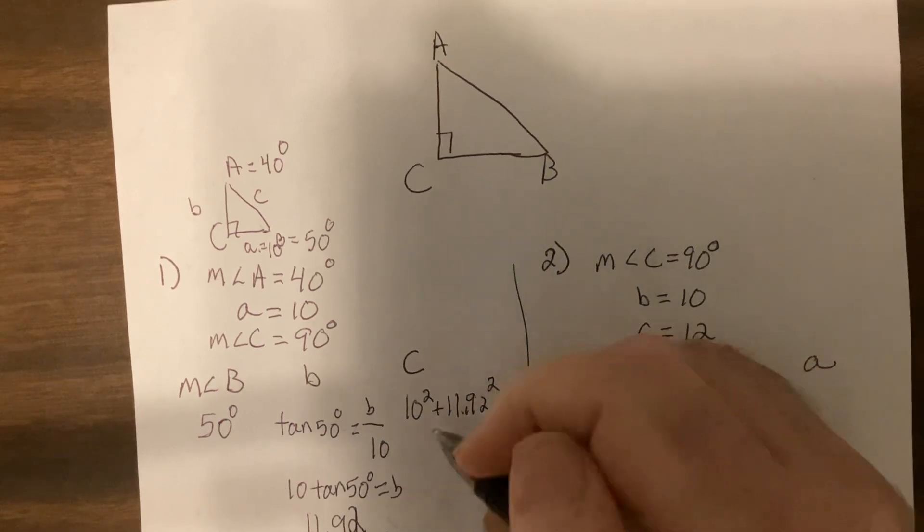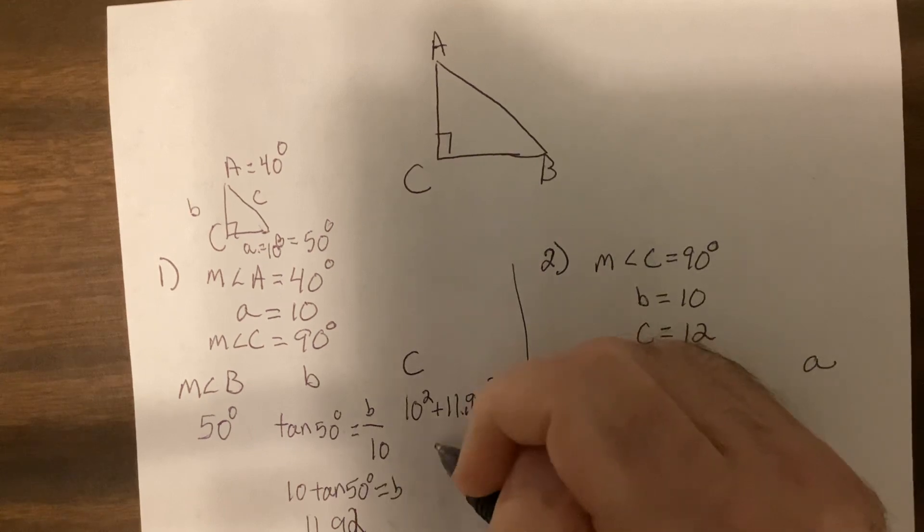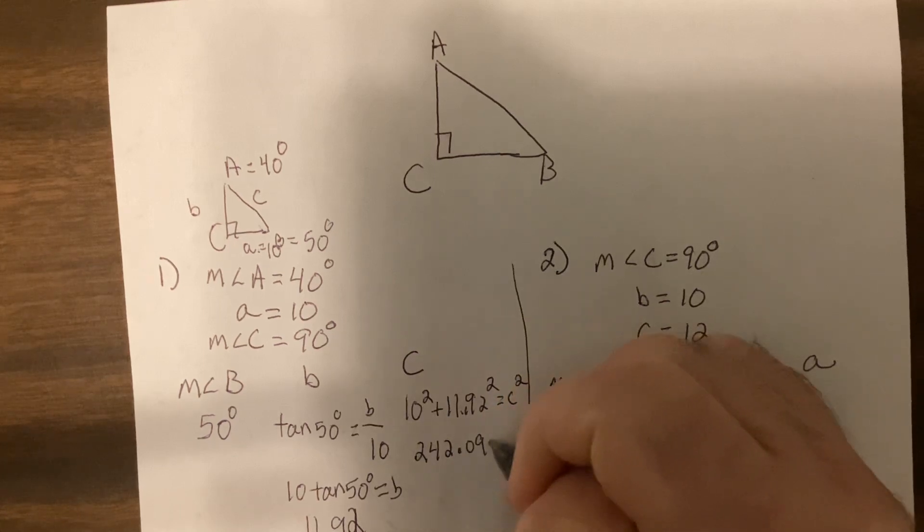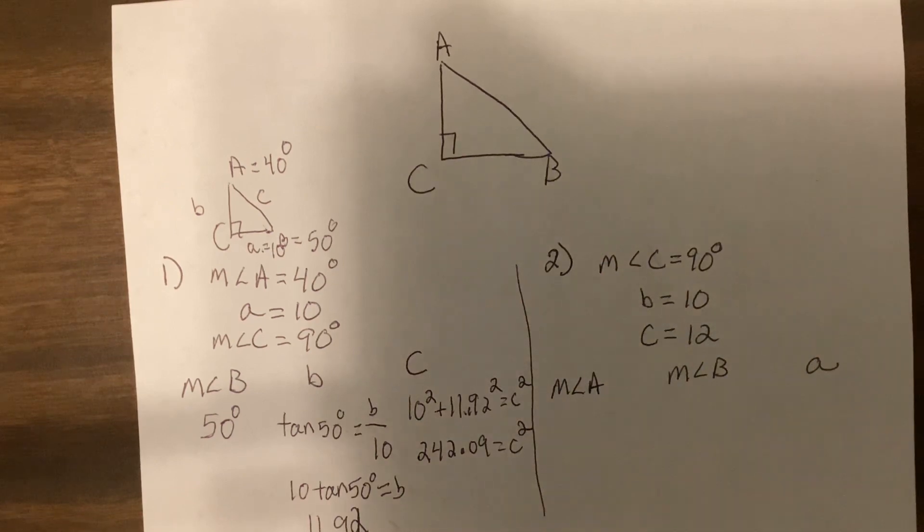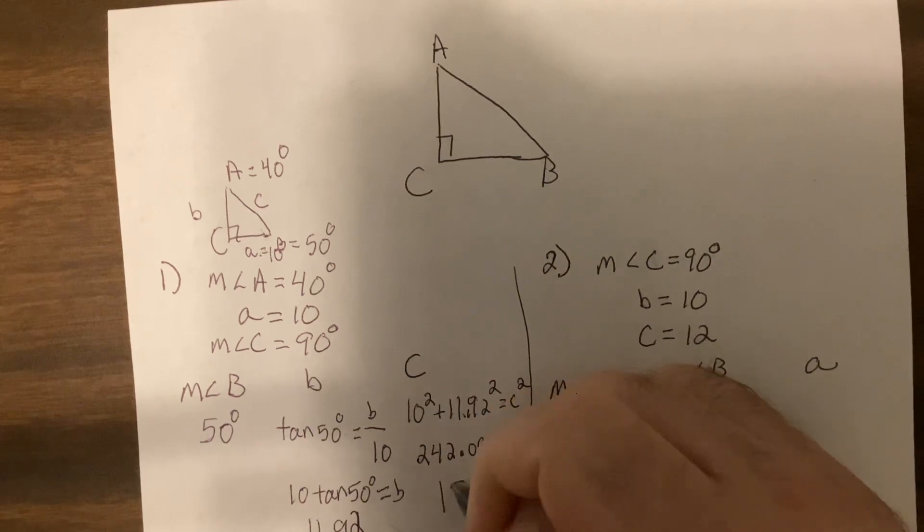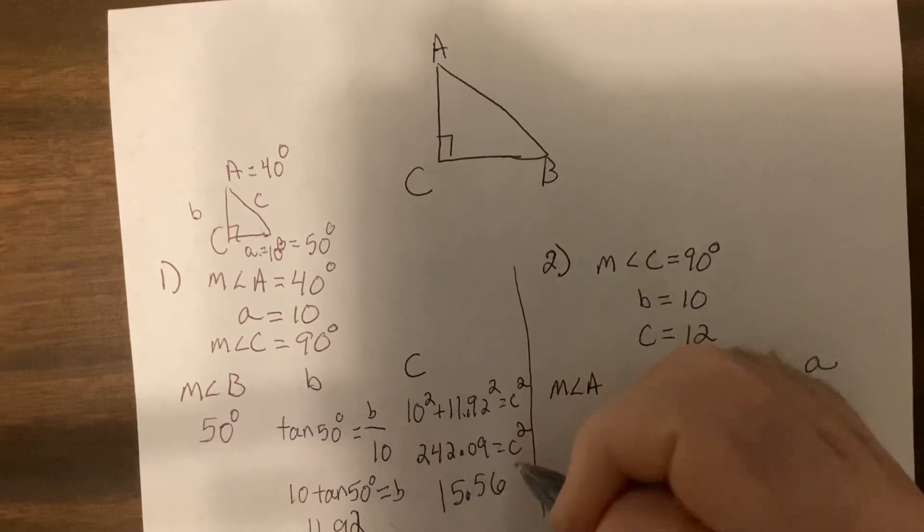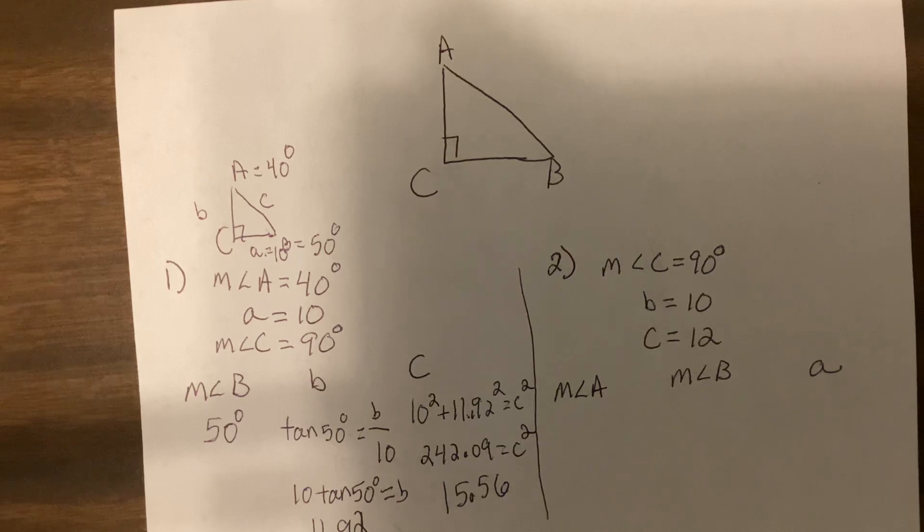So I'm going to add 100 to it: 242.09. Then I need to take the square root of that. So it'd be the square root of 242.09, and I get 15.56. Hey, hey, hey. Now you could have used trigonometry, whatever makes you happy.